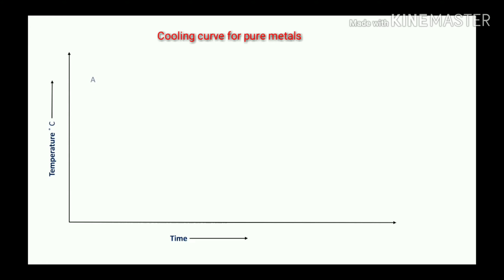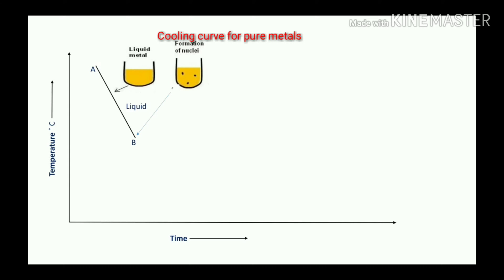According to the melting point of the metal, that will be at higher temperature at point A. From point A to point B, that will be the solidification process. Above the melting point, the metal is in the liquid phase — 100% liquid. At point B, formation of nuclei begins, which is the starting point of solidification, also called the freezing point of the metal.